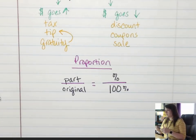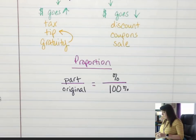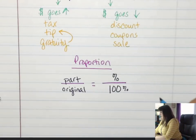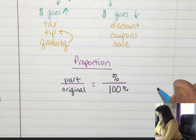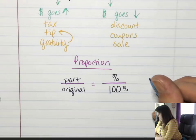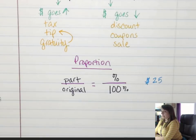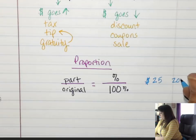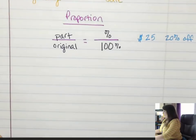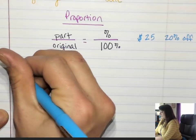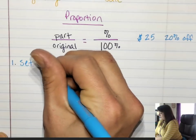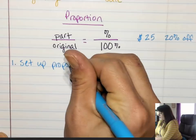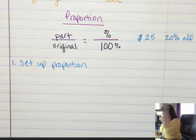I went to Bath and Body Works yesterday - bought a candle. The candles were $25 a piece. I don't pay full price for hardly anything. I used a 20% off coupon. Now the first thing I need to do is set up the proportion.